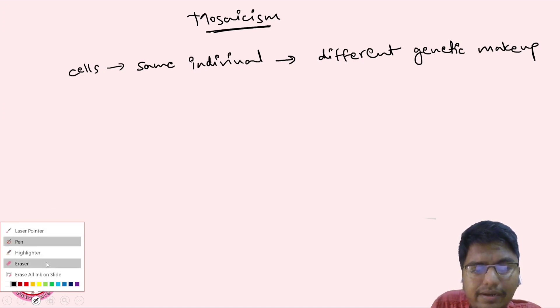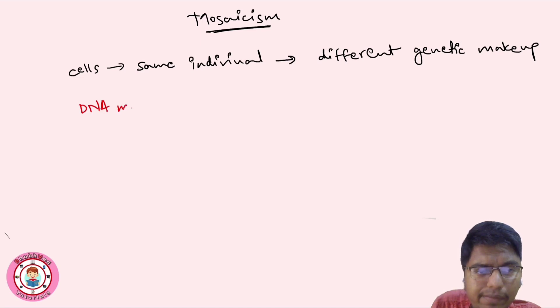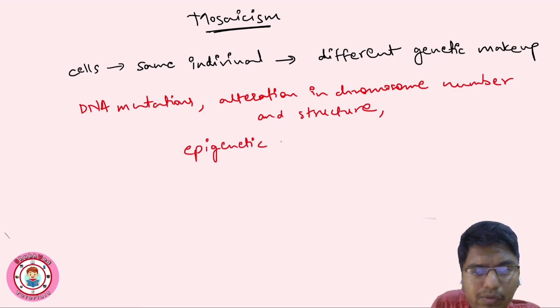Basically, this mosaicism is caused due to DNA changes, DNA mutations, then alteration in chromosome number and structure, as well as epigenetic modifications.